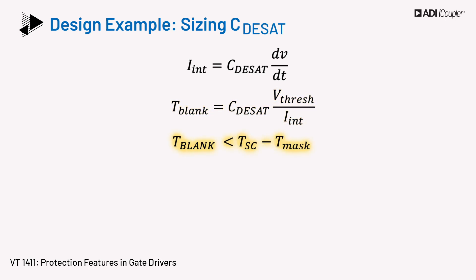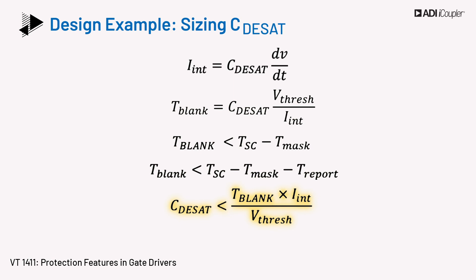To protect the switch, the blanking time needs to be less than the difference between the short circuit withstand time and the masking time T-mask. For conservative designs, the fault reporting time T-report could also be considered, but a design will still be protected if the reporting time is not included. Rearranging the capacitor equation and keeping the blanking time to meet the timing considerations gives the C-desat value. IGBT manufacturers often have a short circuit rating in the 2 to 10 microsecond range, and thus C-desat is chosen to provide T-blank accordingly.